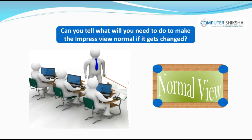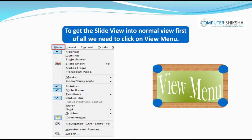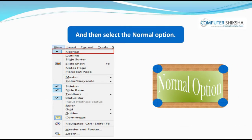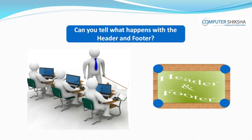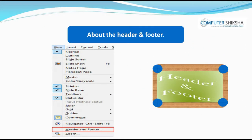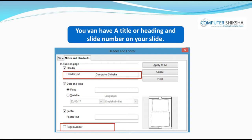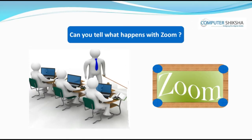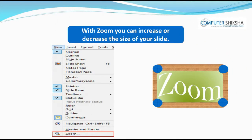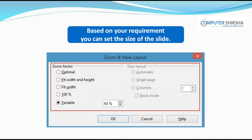Can you tell what you will need to do to make the Impress view normal if it gets changed? To get the Slide view into Normal view, we need to click on View and then select the Normal option. This will change the view of your file back to normal. Can you tell what happens with the header and footer? With the header and footer, you can insert date and time, a title or heading, and slide number on your slide. Can you tell what happens with Zoom? With Zoom, you can increase or decrease the size of your slide. Based on your requirement, you can set the size of the slide.